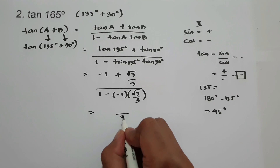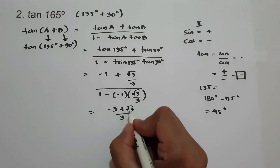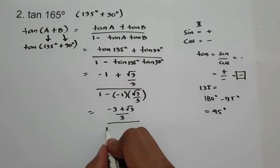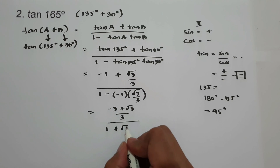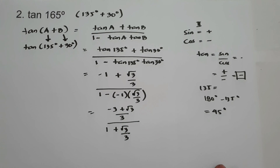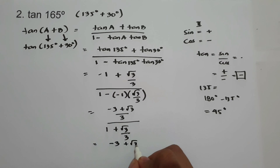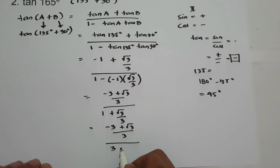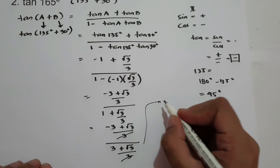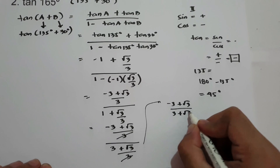Let's get a common denominator of 3: the numerator becomes (-3 + √3)/3, and the denominator becomes (3 + √3)/3. After canceling the 3, we have (-3 + √3) / (3 + √3).